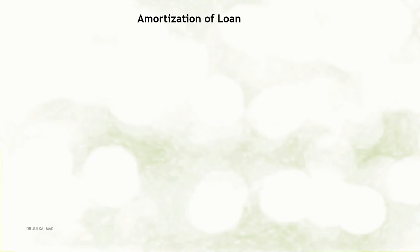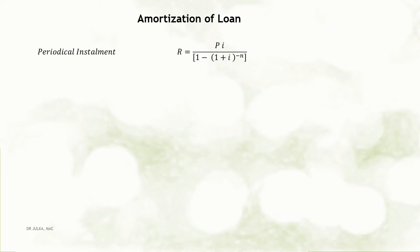Whenever we talk about Amortization of Loan, we are interested in calculation of Periodical Payment or Periodical Installment. The Periodical Installment is denoted by capital R and can be calculated using the formula: P multiplied by i, the whole divided by 1 minus (1 plus i) whole raised to the power minus n, where P denotes present value, i denotes interest rate per period, and n denotes number of periods.